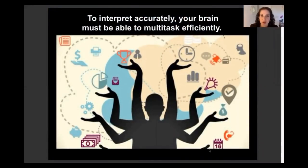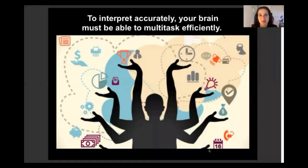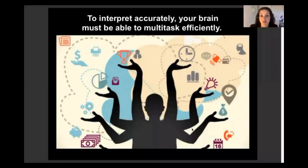To interpret accurately, your brain has to multitask efficiently. Neuroscientists have studied what happens in our brain when we're interpreting, and it is one of the most demanding multitasking mental processes ever analyzed. There's a lot going on, so we have to multitask efficiently in order to faithfully convey the meaning of the message.